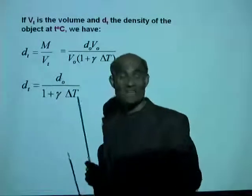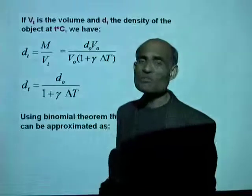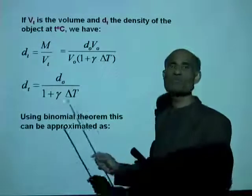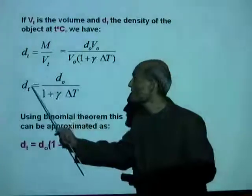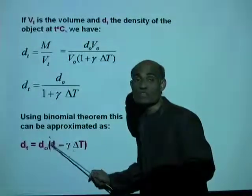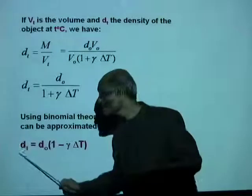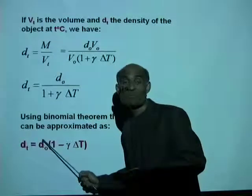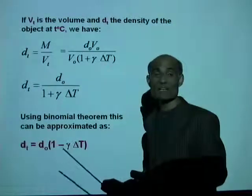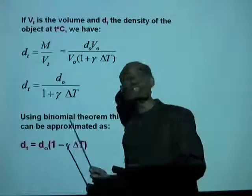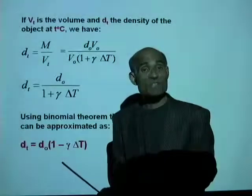We can write this in a simpler form by using the binomial theorem. I'm going to give you simply that approximation. Using binomial theorem, this can be approximated as Dₜ equal to D₀ times 1 minus gamma delta T. So density at a higher temperature equals density at 0 degrees Celsius times 1 minus gamma delta T, where gamma is the coefficient of volume expansion and delta T is the change in temperature.